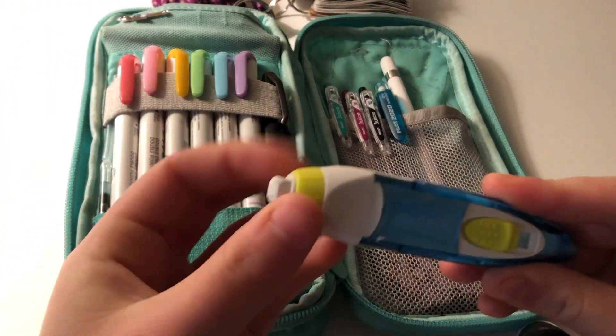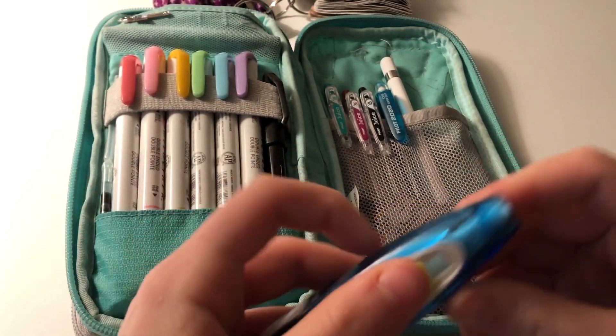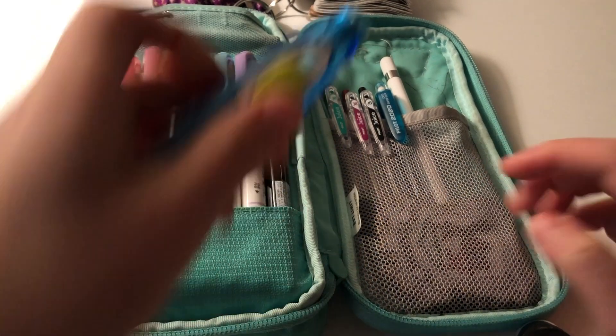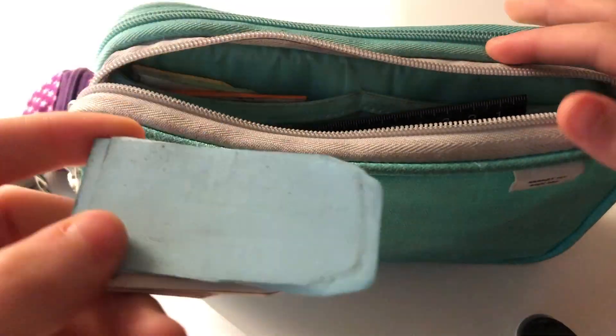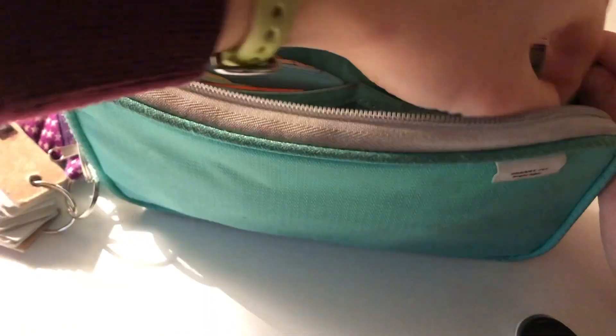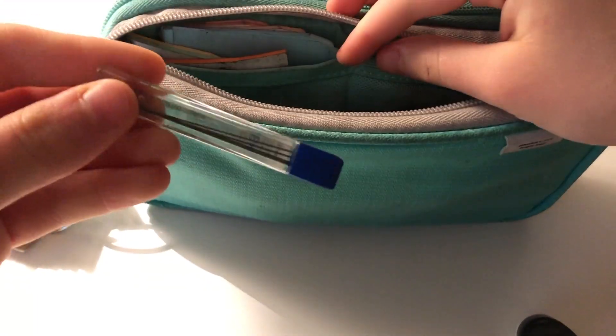This is my Tombow Mono two-end eraser and whiteout. These are sticky tabs. This is some lip balm and Uni HB lead.